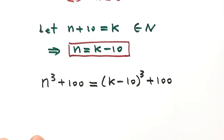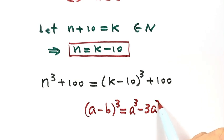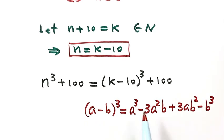Then we're going to use this formula. That's a minus b to the third equals a to the third minus 3a squared b plus 3ab squared minus b to the third. Then we're going to apply this formula to here.